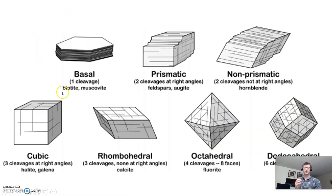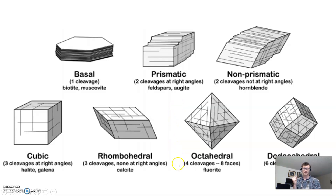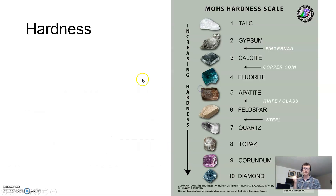This slide gives you an overview of some of the more interesting shapes that it could take. Believe it or not, smashing some minerals open will form something like octahedrons or dodecahedrons — very unusual characteristic shapes. We can also talk about hardness.